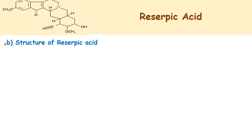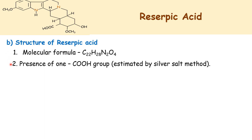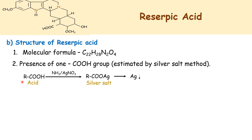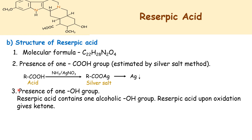Now we see the structure of reserpic acid. The molecular formula of reserpic acid is C22H28N2O4. Reserpic acid contains one COOH group, which is estimated by the silver salt method. One mole of acid when treated with ammoniacal silver nitrate gives a silver salt, which gives one mole of silver. Reserpic acid also contains one alcoholic OH group.